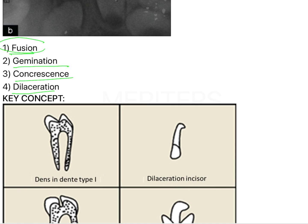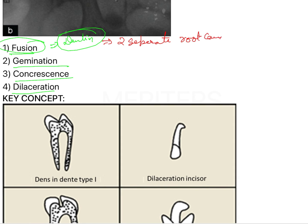Fusion is when two teeth that are complete generally fuse with each other through dentin. Most of the time they are fused with dentin and they have two separate root canals, which can help you identify this particular anomaly.